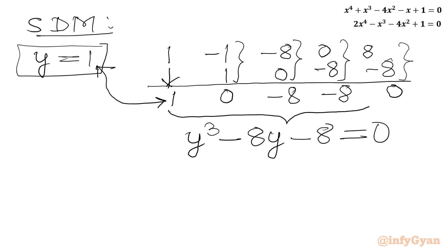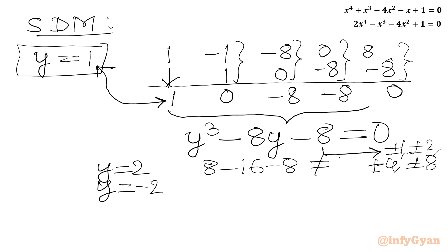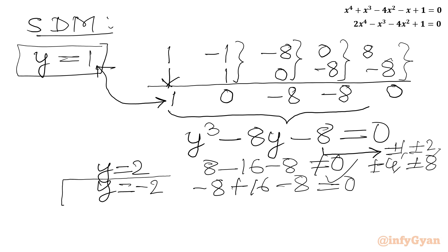Using the rational root theorem, the eligible factors of 8 are ±1, ±2, ±4, ±8. Testing y = 1 and y = -1: neither satisfies. Testing y = 2: 8 - 16 - 8 ≠ 0. Testing y = -2: (-8) - 8(-2) + 8(-2) — wait, (-2)³ = -8, -8×(-2) = 16, so -8 + 16 - 8 = 0. Yes! So y = -2 is a root of the cubic.